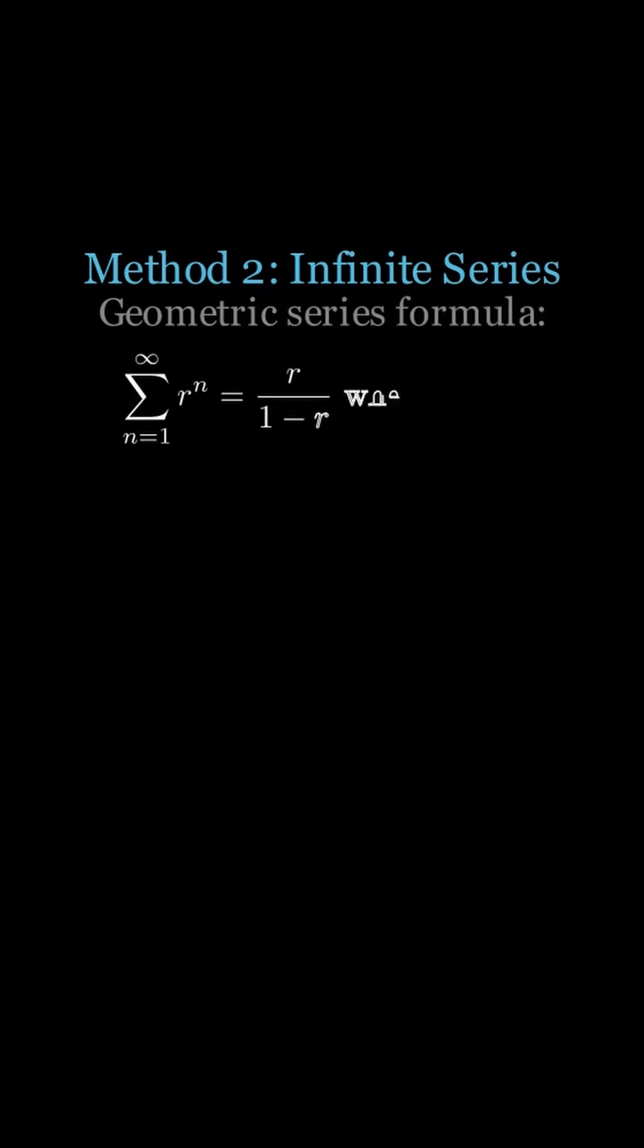Now we can apply the formula for a geometric series, which states that the sum from n equals 1 to infinity of r to the n equals r over 1 minus r, when the absolute value of r is less than 1. Since r is 1 tenth, this condition is met, so we can apply the formula.